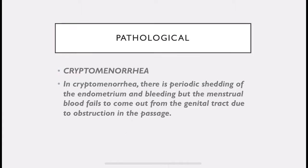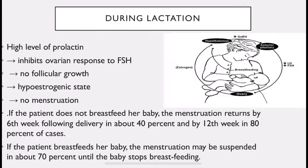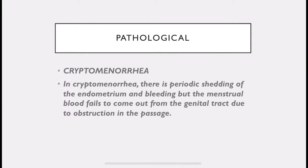Now, pathological cryptomenorrhea. In cryptomenorrhea, there is periodic shedding of the endometrium and bleeding, but the menstrual blood fails to come out from the genital tract due to obstruction in the passage.